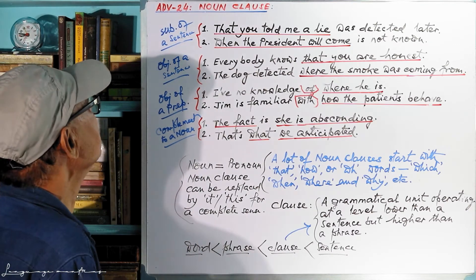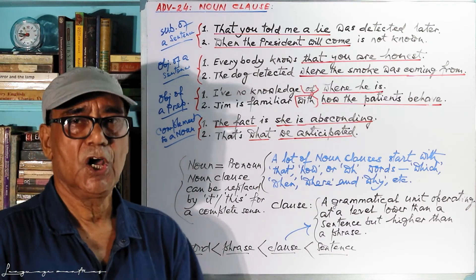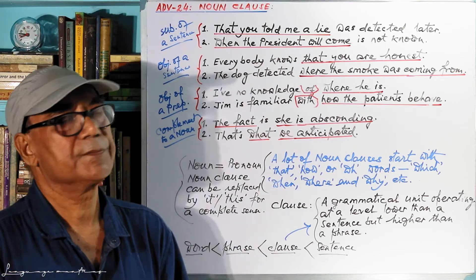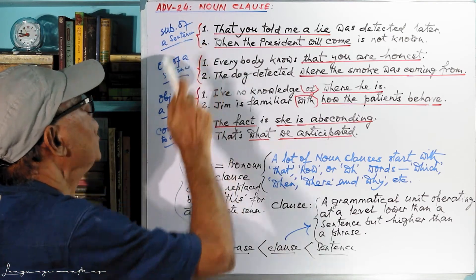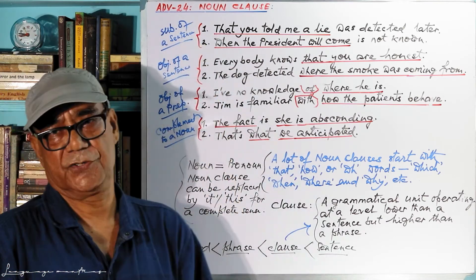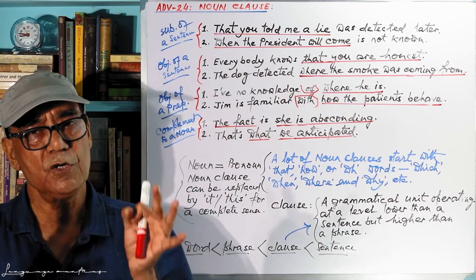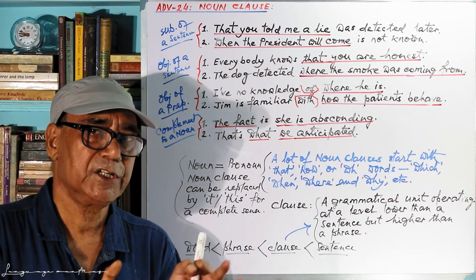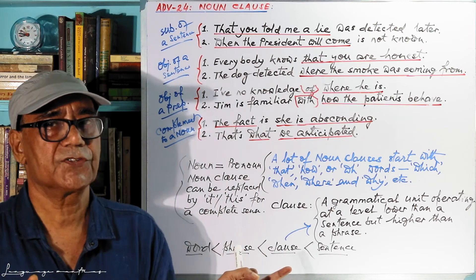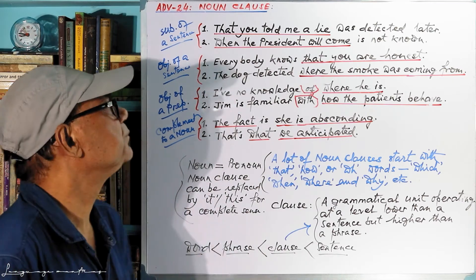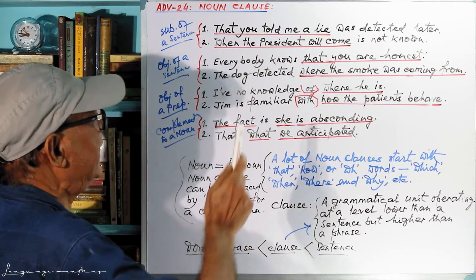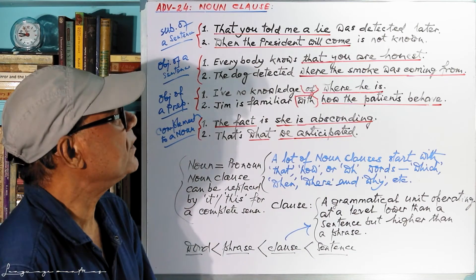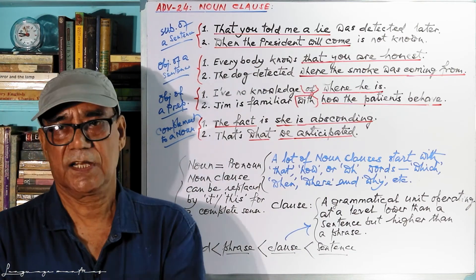Number one function of a noun clause: subject of a sentence. That means the noun clause becomes the subject of a sentence. For example: "That you told me a lie was detected later."